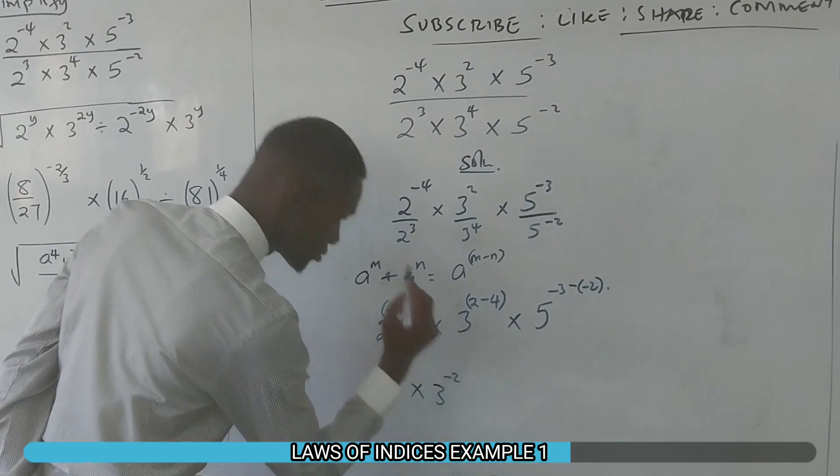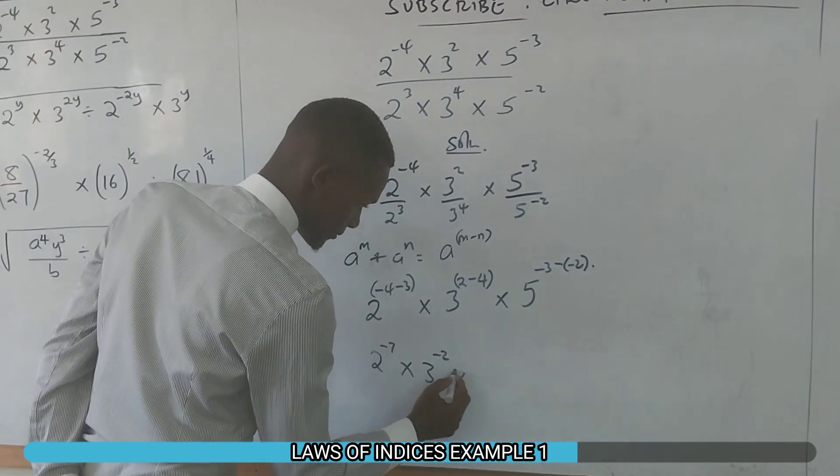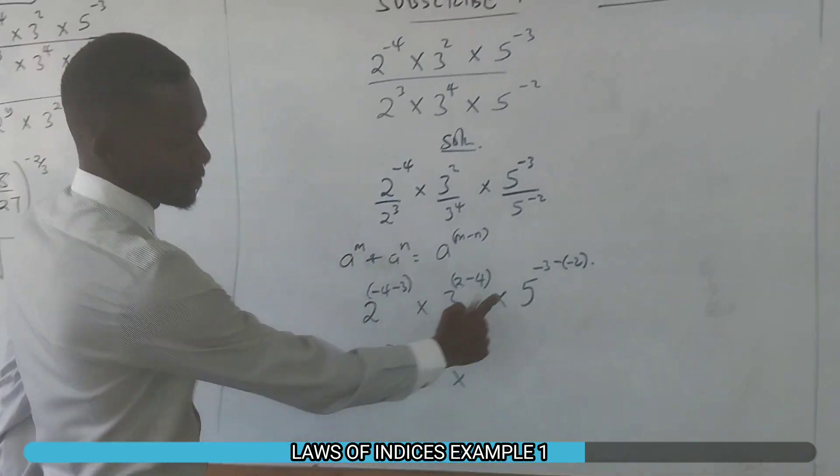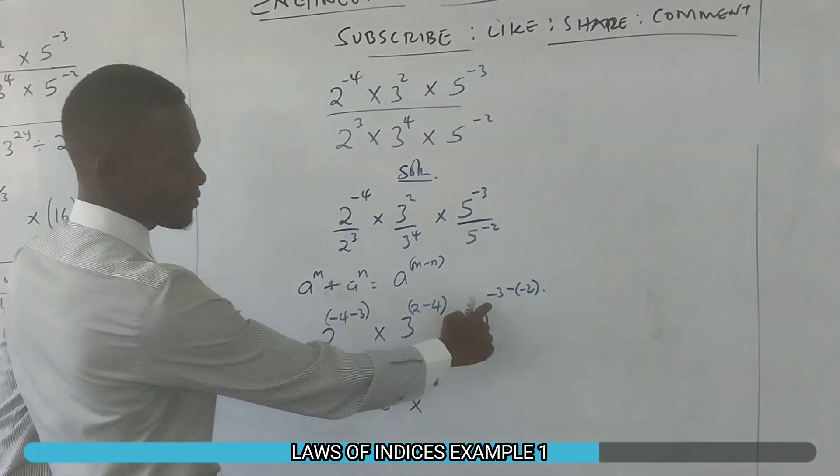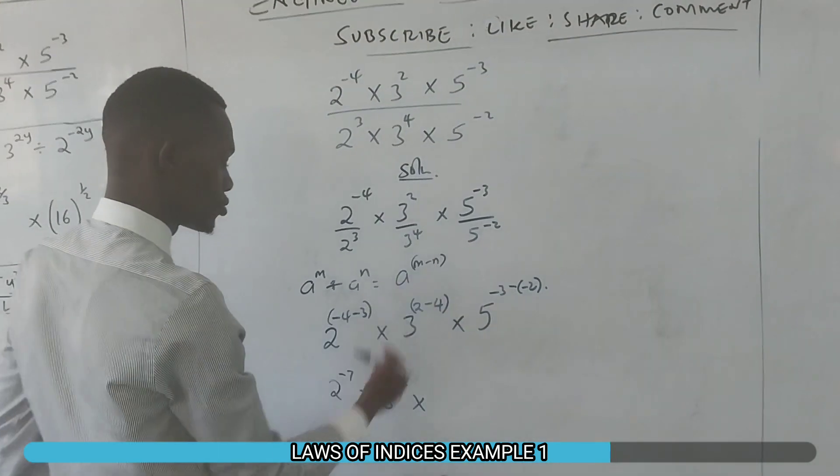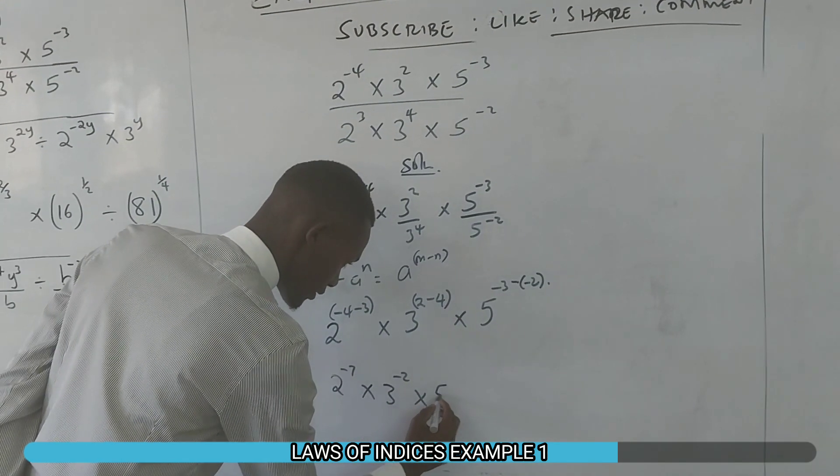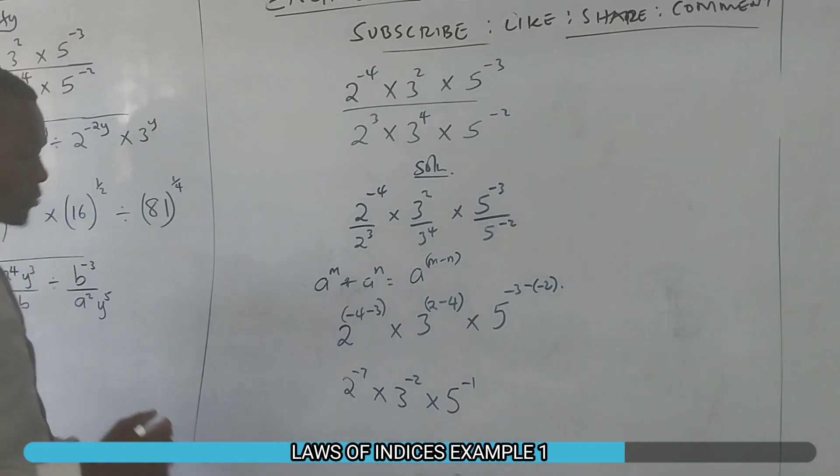Then times... -3 minus minus 2 gives you a positive, so we have -3 plus 2, which gives -1, so 5^-1.